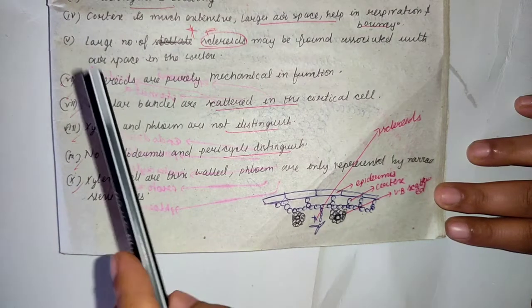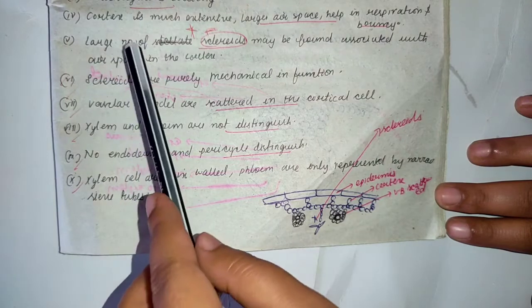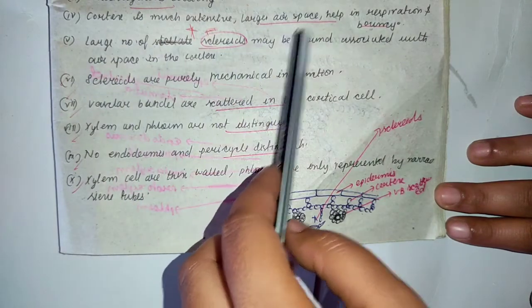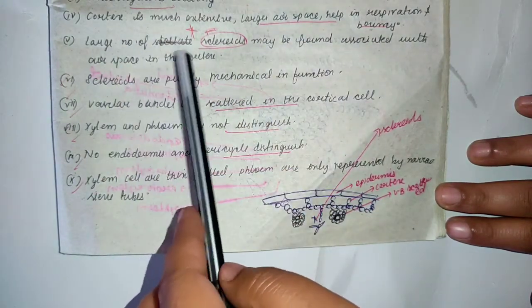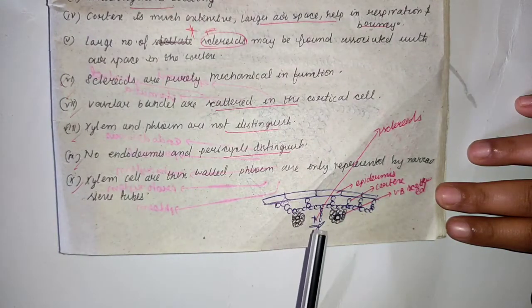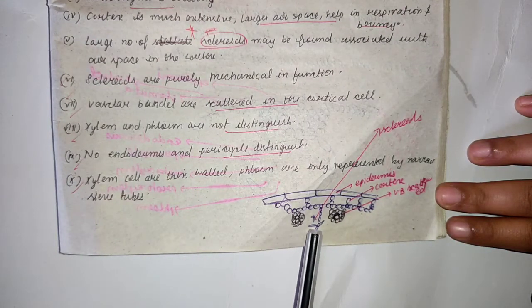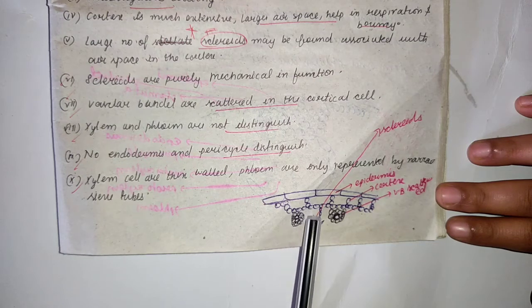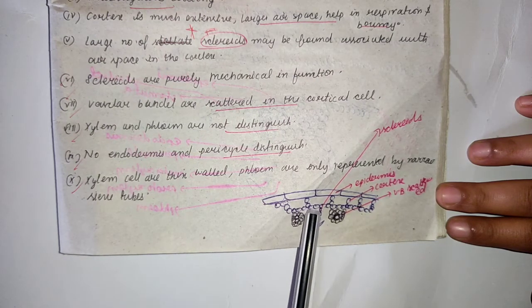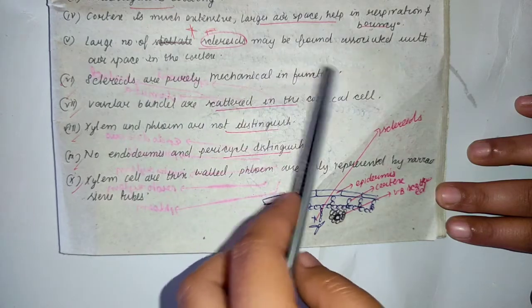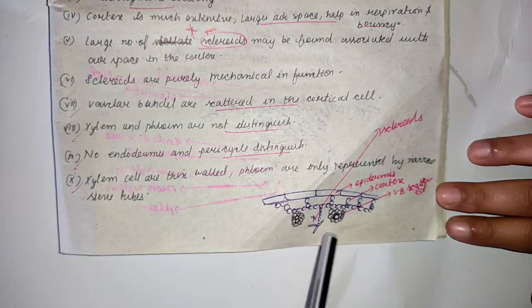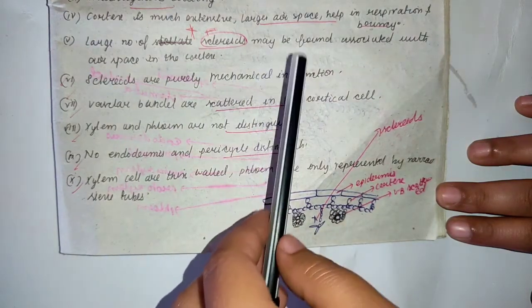A large number of sclereids may be found associated with the air spaces in the cortex. Sclereids are present in the cortex region of the stem of floating hydrophytes, and they serve a purely mechanical function.